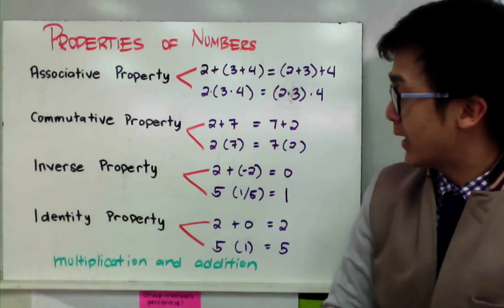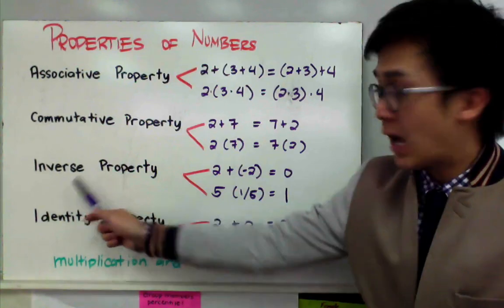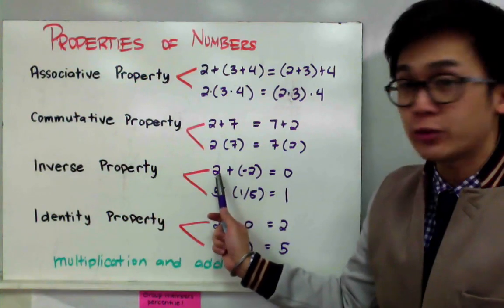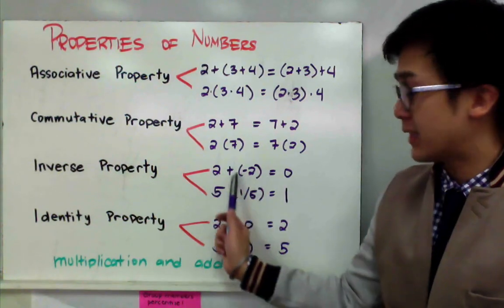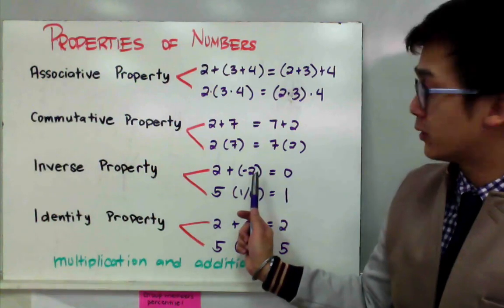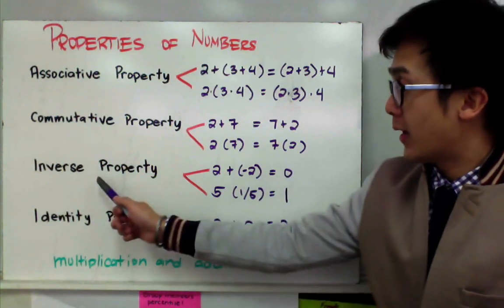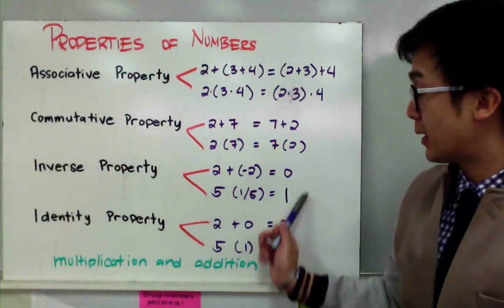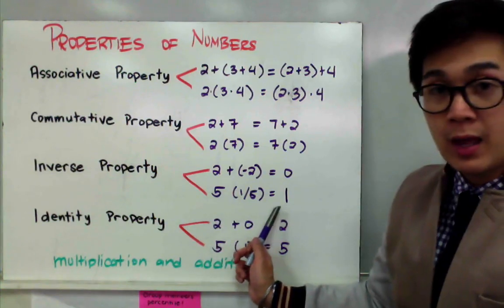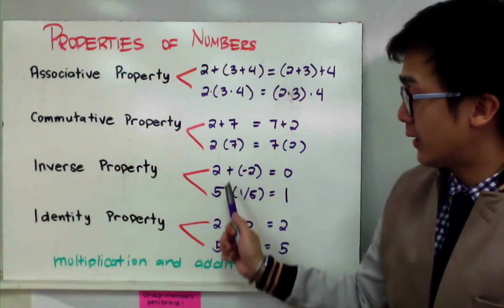Now for the inverse property, it's basically telling you to add or subtract a number that will give you its inverse. For addition, the inverse is equal to zero. So you need to think of a number to add to two that will make it equal to zero — and that number is negative two. For inverse property under multiplication, the inverse is one. So if I have five, I need to multiply a number to five for it to equal one, and that number is its reciprocal, which is one over five.